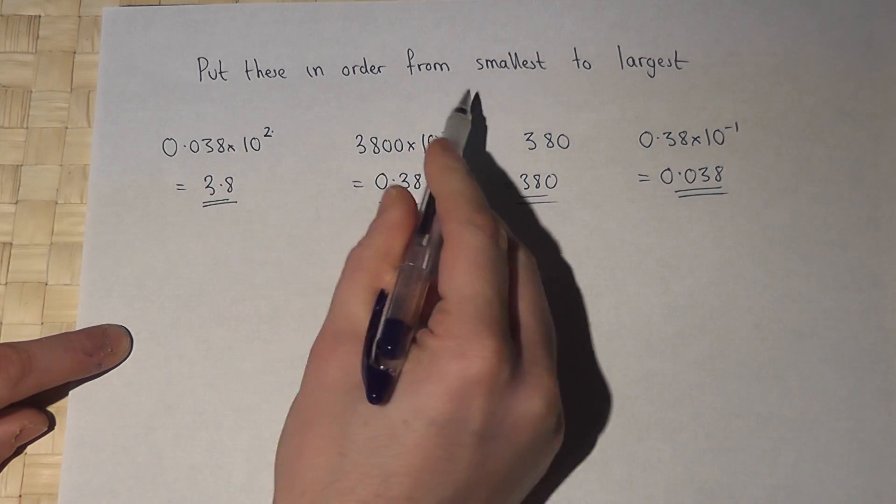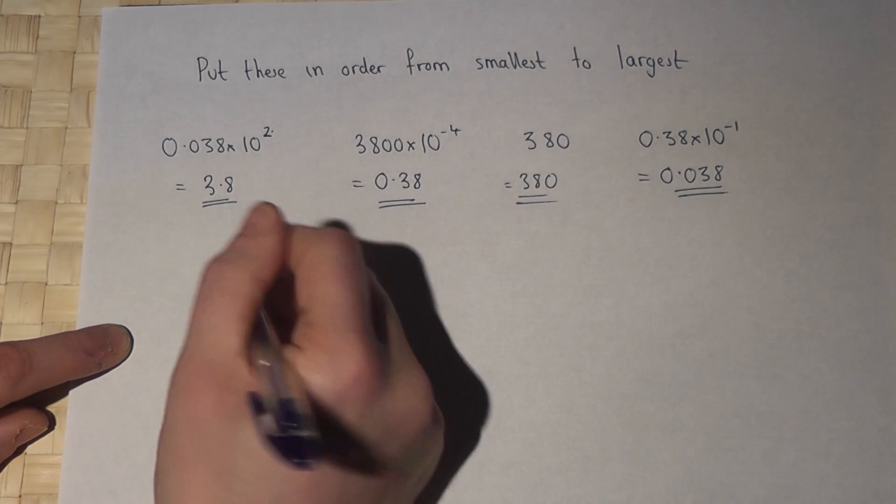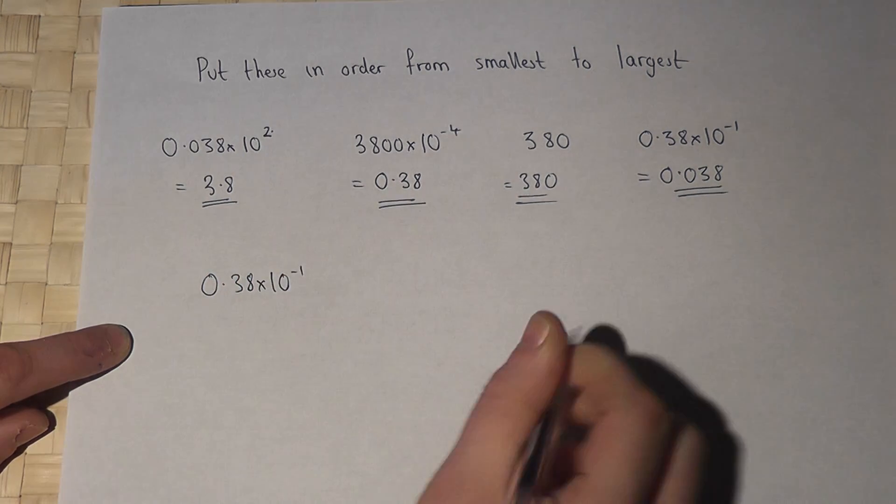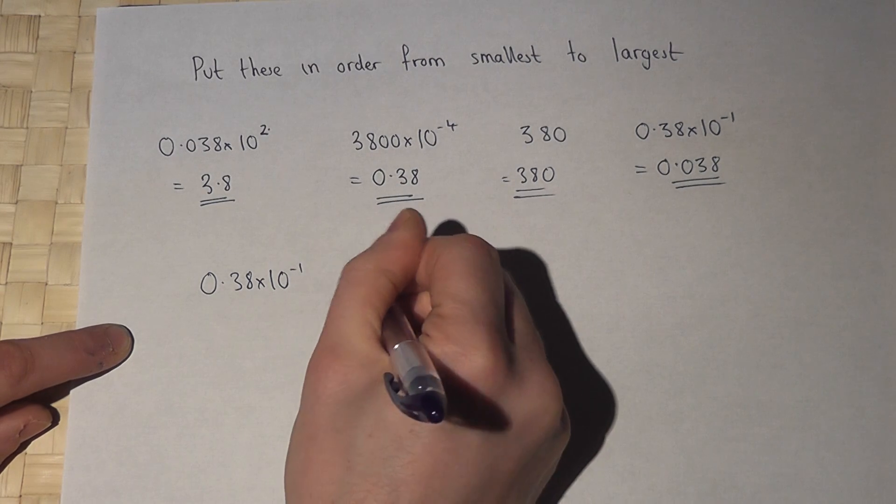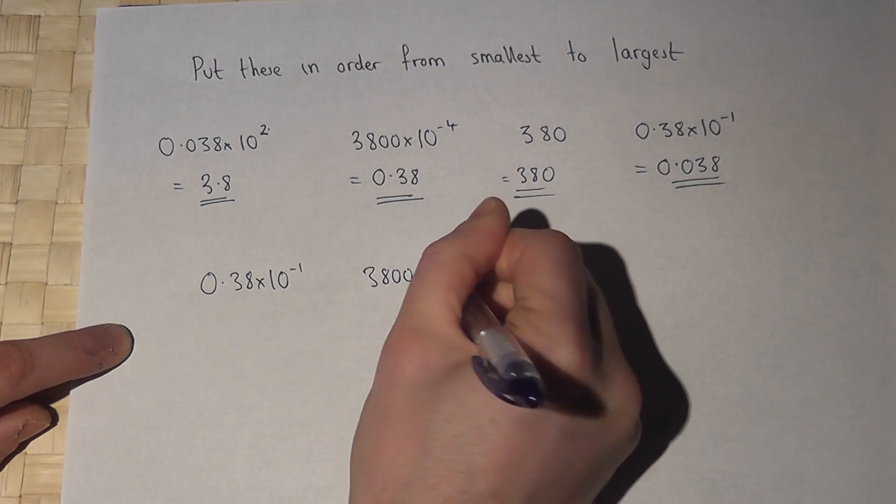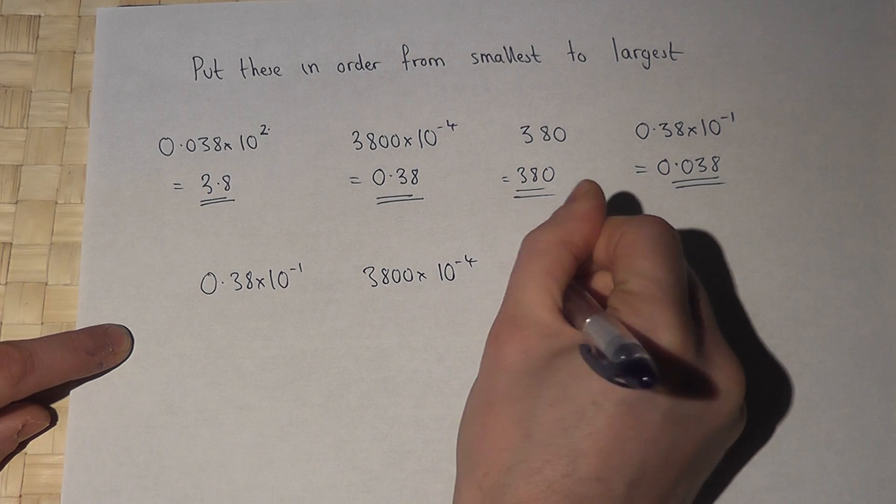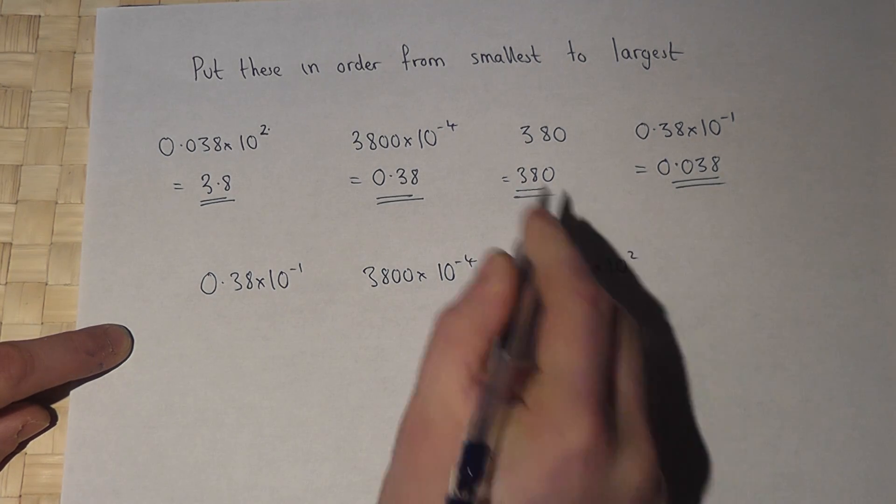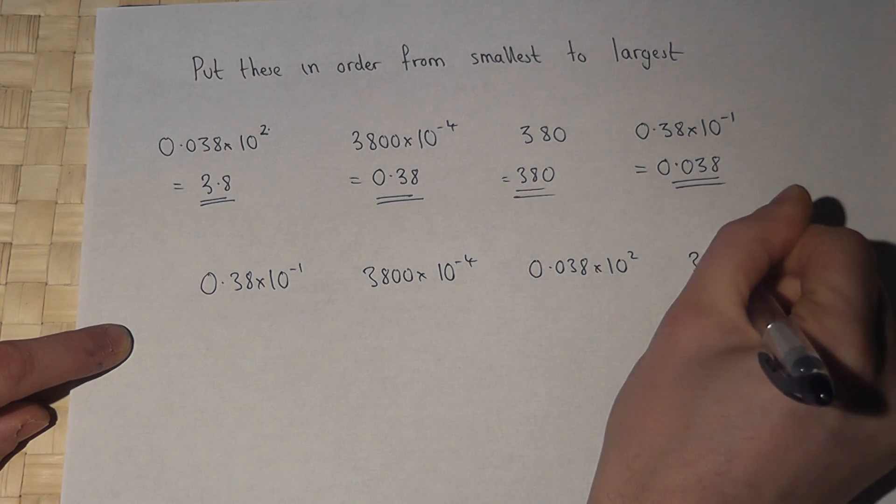So put these in order from smallest to largest. Well, that's the smallest. Then that's the next smallest. Then that's the next smallest. And finally, we have the number 380.